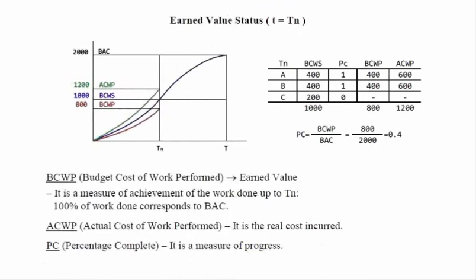We also have additional information related with the actual costs, stored in the variable ACWP, the actual cost of the work performed. For example, instead of implementing A paying 400 euros, we in fact paid 600 euros. We had the same problem with B — instead of paying 400 euros as planned, we spent 600 euros. This kind of situation can be due to problems or difficulties related with the implementation of the activities that we did not anticipate.